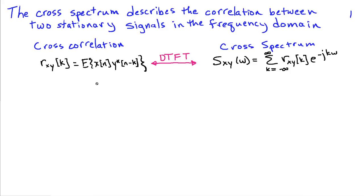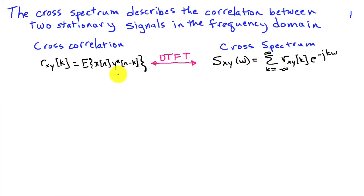If we have the cross correlation being equal to the expected value of x of n times y complex conjugate of n minus k, in this lecture we're going to use the cross correlation assuming the signals in general are complex, because it works out a little easier in terms of interpreting what's happening in the frequency domain. So when we've worked with real signals in the past we've only used the expected value of x of n y of n minus k, but if the signals are possibly complex we need a conjugate. If we take the discrete time Fourier transform of the cross correlation sequence, we get the cross spectrum s x y of omega.